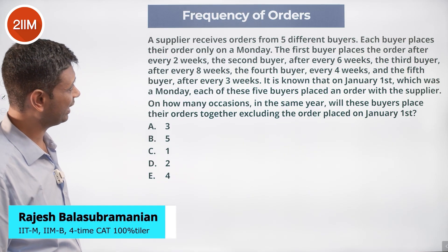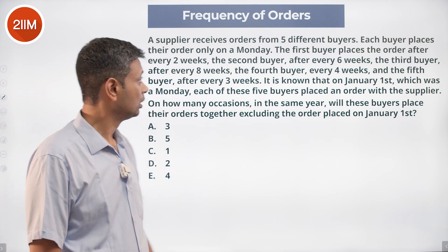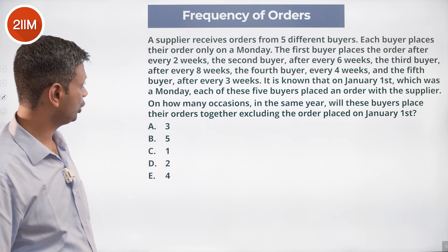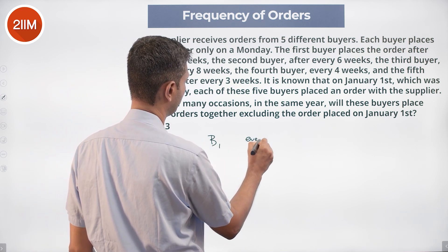A supplier receives orders from five different buyers. Each buyer places their order only on a Monday. The first buyer places the order after every two weeks, so buyer one every two weeks.